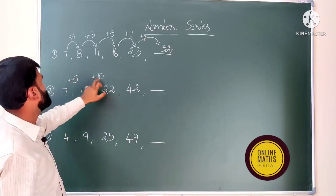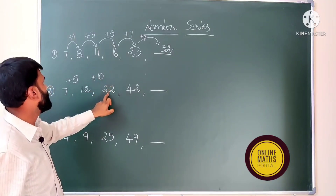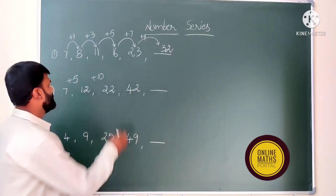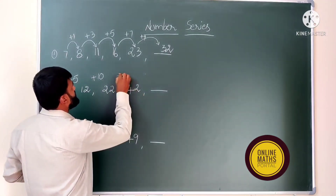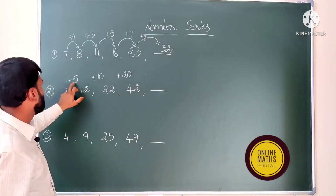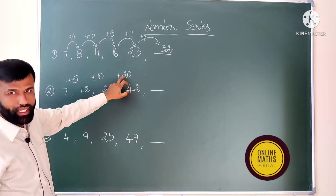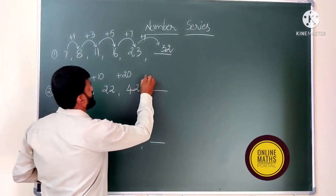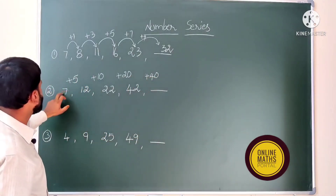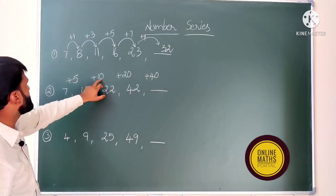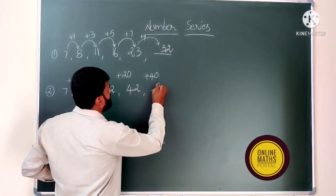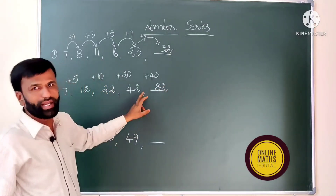So the correct logic here is: 5, then 5 times 2 is 10, then 10 times 2 is 20. So: 7 plus 5 is 12, 12 plus 10 is 22, 22 plus 20 is 42, 42 plus 40 is 82. So 82 is the required answer.